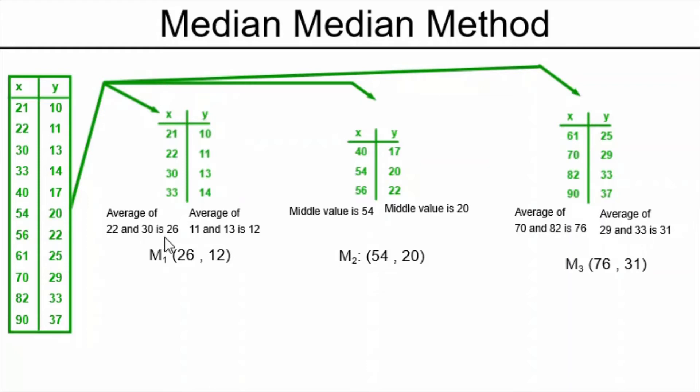Once we find our medians, we arrange them into points m1, m2, and m3. So the median of the x's and the median of the y's are the x and y coordinates of point m1 with this first table. The second and third tables work the same way.